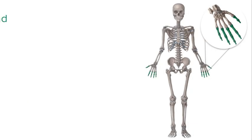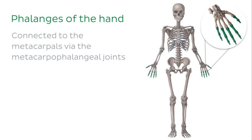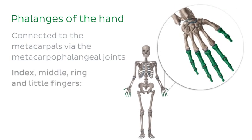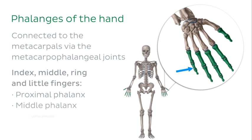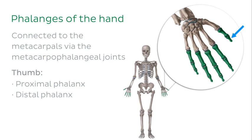The phalanges of the hand are connected to the metacarpals via the metacarpal phalangeal joints. Four of the five phalanges — corresponding to the index, middle, ring and little fingers — have a proximal phalanx, a middle phalanx and a distal phalanx. The thumb however only has two phalanges: a proximal phalanx and a distal phalanx. The phalanges are connected to each other via hinge joints known as the interphalangeal joints.